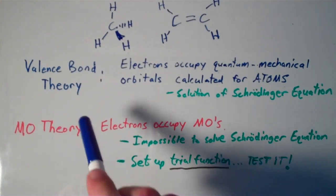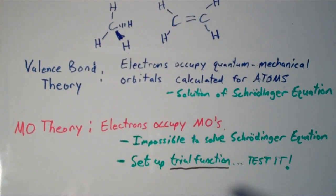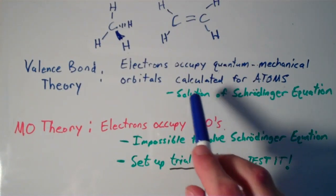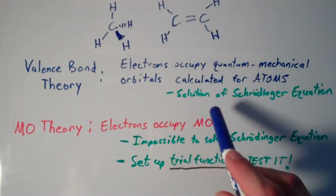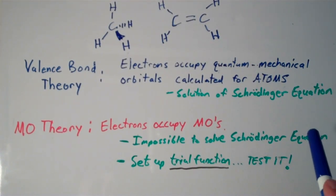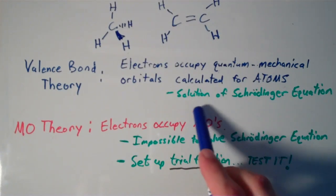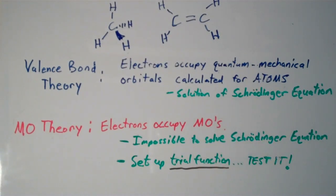So, recall that in valence bond theory, the electrons occupy these quantum mechanical orbitals that are calculated for atoms, for the individual atoms themselves. And these orbitals are calculated by solving the Schrödinger equation. So, the Schrödinger equation is a second-order differential equation. And the solution of a differential equation is itself a function. And those functions are the functions that you see, the 3D models that you see for hybrid orbitals.